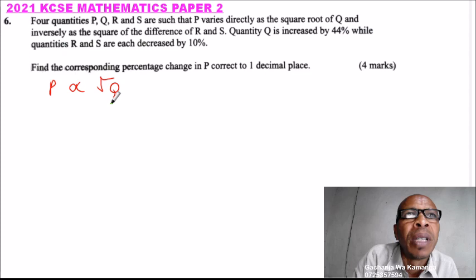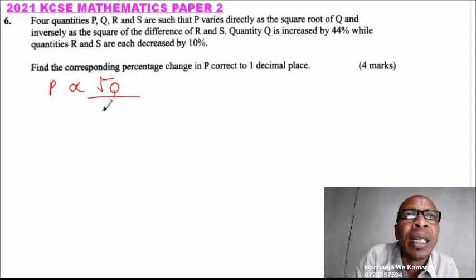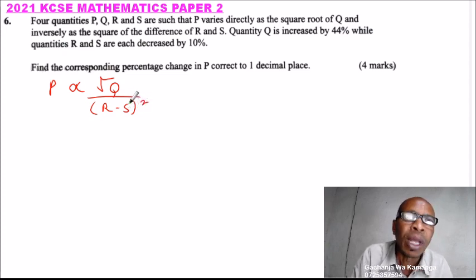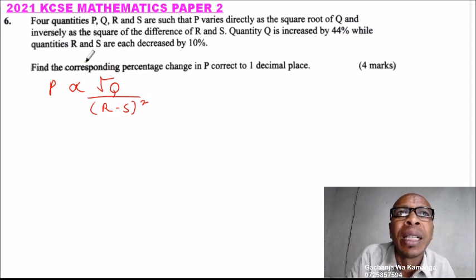And inversely as the square of the difference of R and S. We write that as (R - S)². Quantity Q is increased by 44 percent while quantities R and S are each decreased by 10 percent. Find the corresponding percentage change in P correct to one decimal place.